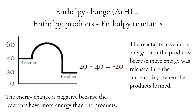The reactants have more energy than the products, and this is because more energy was released when the bonds formed between the products, and this energy was released into the surroundings. Because enthalpy change is the energy of the products minus the energy of the reactants, and the products have less energy, the enthalpy change for an exothermic reaction is always negative.